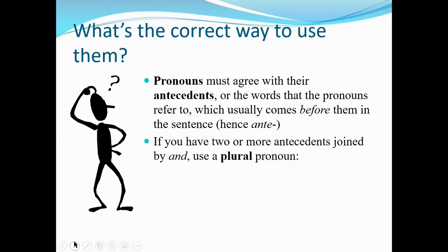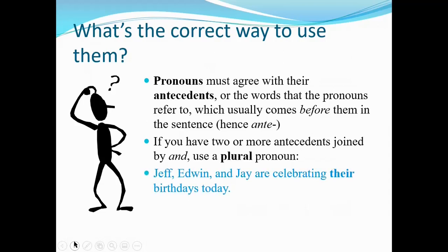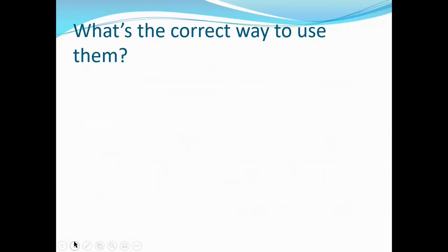If you have two or more antecedents joined by 'and,' you use a plural pronoun — as in 'Jeff, Edwin, and Jay are celebrating their birthdays today.' They each have a birthday, and there are three of them. You wouldn't say 'Jeff, Edwin, and Jay are celebrating his birthday today' because that would make no sense. So you have to make sure you're using a plural pronoun there.